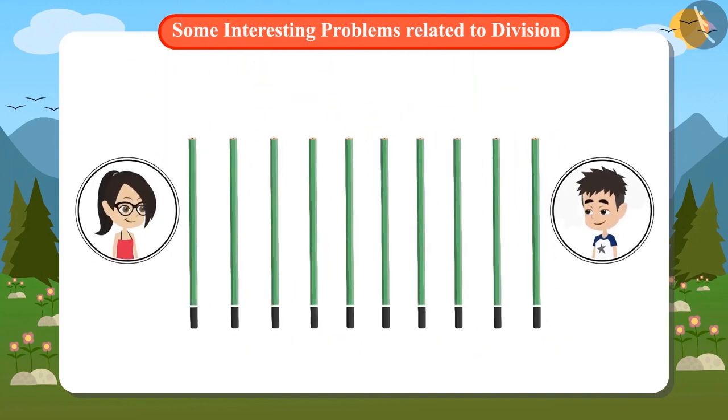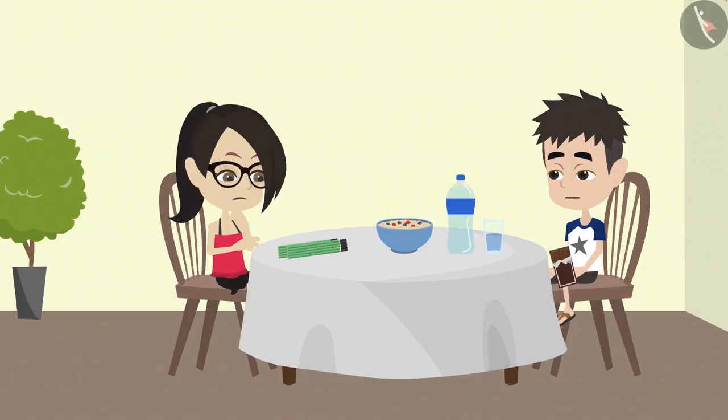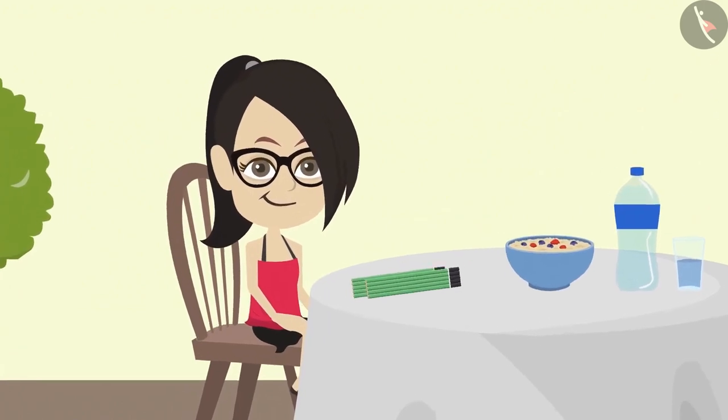Vandana has to keep half of these pencils with her and give half of them to her brother. But Vandana does not understand how she should distribute these pencils equally between two people. Can you help Vandana?